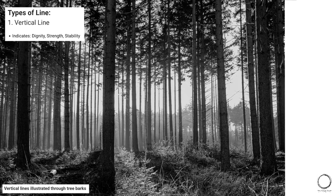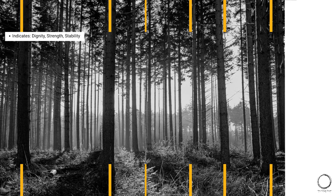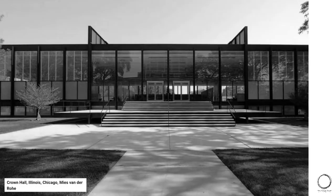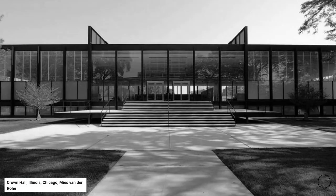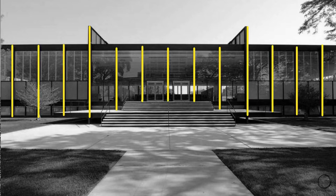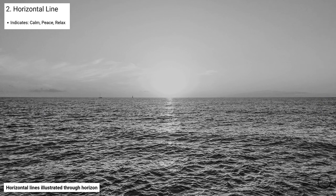Vertical lines, illustrated through three parks, indicate a sense of dignity, strength, and stability. This is applied in architecture through the amazing building by Mies van der Rohe's Crown Hall. Moving on, horizontal lines indicate calm, peace, and relaxation.